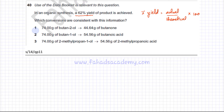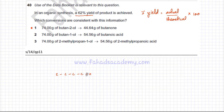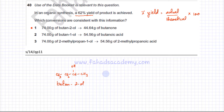Looking at the first option, butane-2-ol is being converted to butanone. Butane-2-ol has four carbons with a hydroxyl (OH) group on the second carbon and the remaining positions filled with hydrogens. The product, butanone, has four carbon atoms with a C=O double bond and hydrogens completing the remaining bonds.